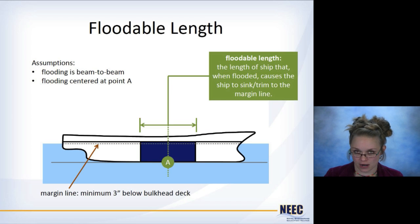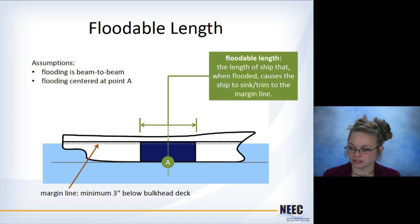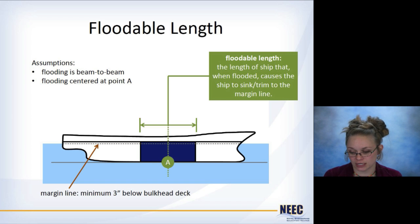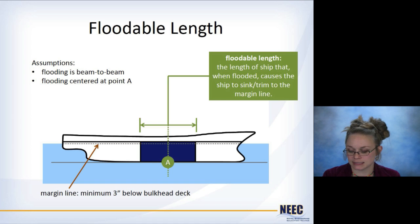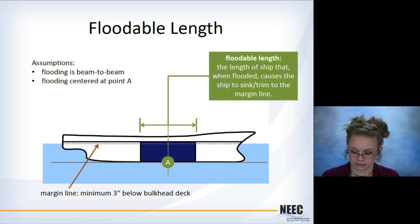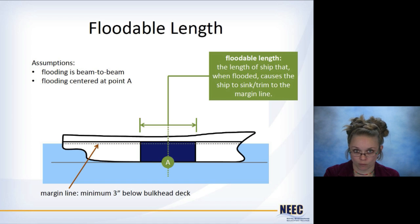Floodable length is a somewhat unusual concept, so I have some pictures here to help make sense of it. In general, the floodable length is the length of the ship that, when flooded, will cause the ship to sink and trim such that the margin line is immersed in the water. The margin line is an imaginary line — a minimum of three inches below the bulkhead deck — and it acts like the bulkhead deck with a factor of safety applied. If the margin line is submerged, that's the maximum flooding the ship can handle before it sinks. A couple of assumptions: the flooding is assumed to be beam to beam, going from one side of the ship all the way to the other, and the floodable length is centered at the middle of the flooded region.